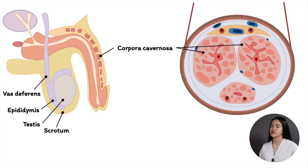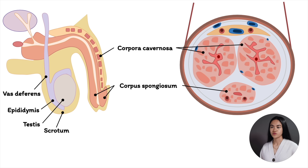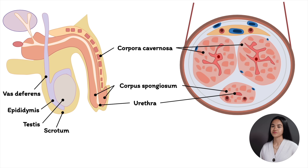The third compartment is called the corpus spongiosum. It's below the corpora cavernosa, surrounds the urethra, and extends to form the tip of the penis. The sinusoids here are bigger than those of the corpora cavernosa.